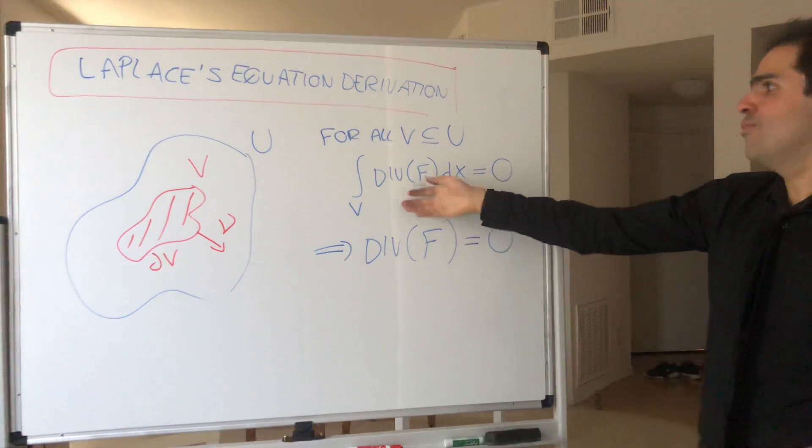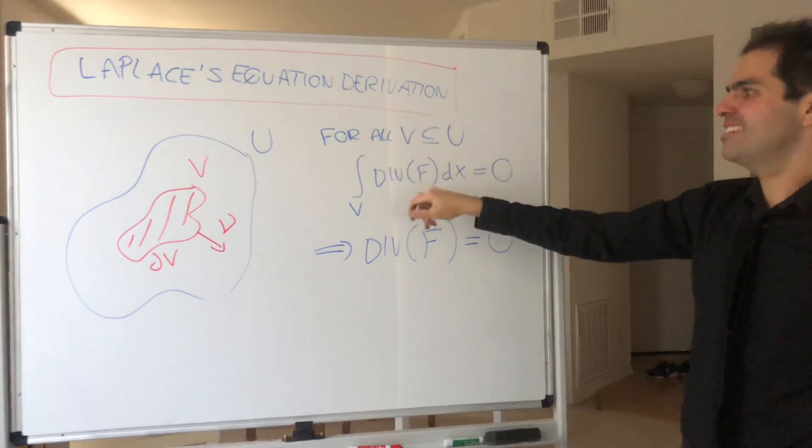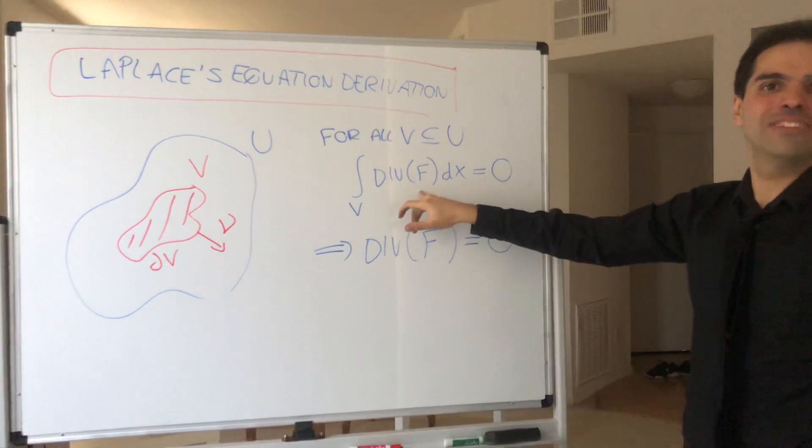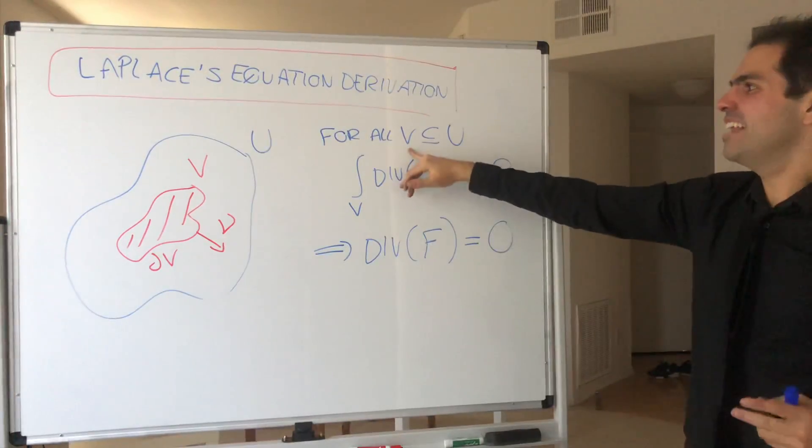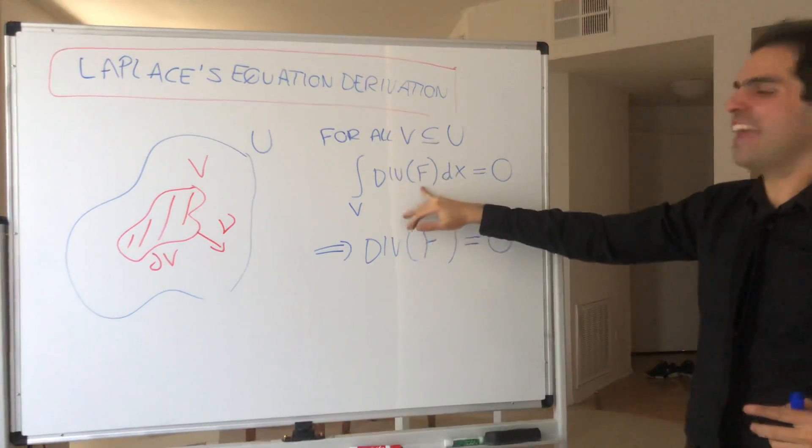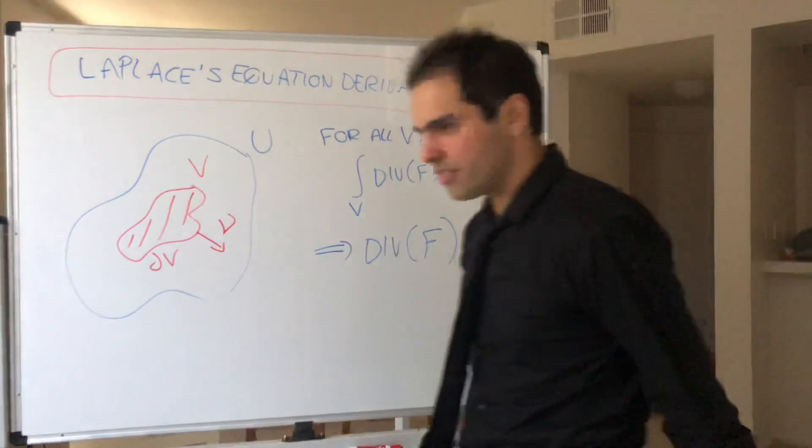And in case, if you want to know how to prove it, it's very nice. Just let V be the set where the divergence is positive. Then, essentially, it's nowhere positive. And if you let V be the set where this is negative, it's nowhere negative. So, it has to be zero.